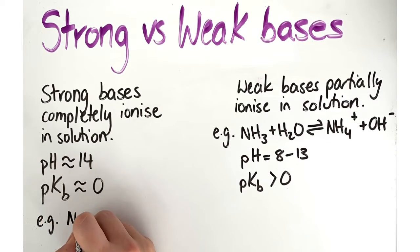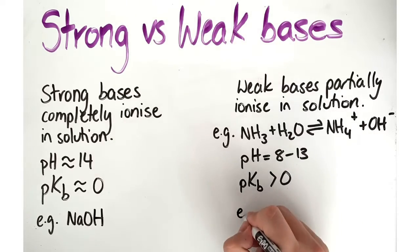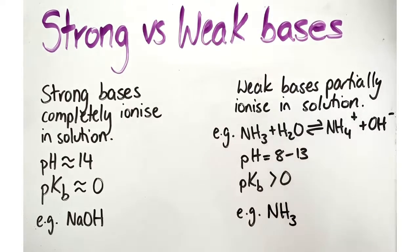So examples of strong bases are sodium hydroxide and calcium hydroxide, and an example of a weak base would be ammonia.